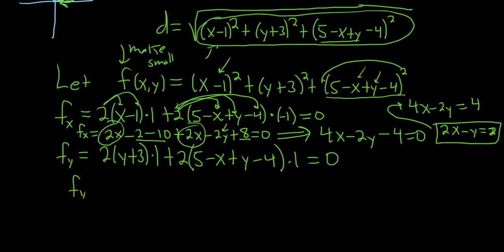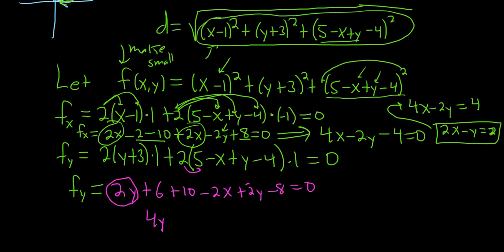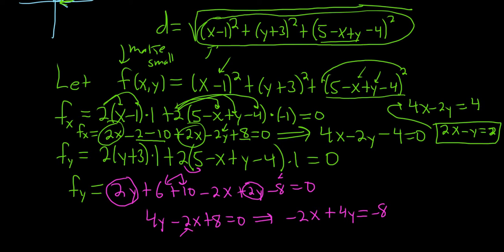Now for fy: expanding gives 2y plus 6 plus 2 times 5 minus x plus y minus 4 times 1, which is 10 minus 2x plus 2y minus 8. Collecting terms: 4y minus 2x plus 8 equals 0, so negative 2x plus 4y equals negative 8. That's our second equation.